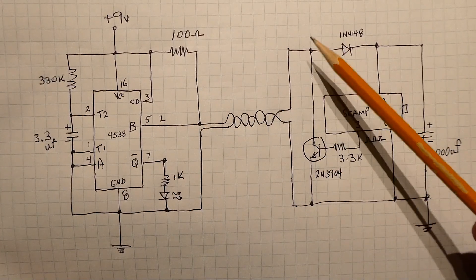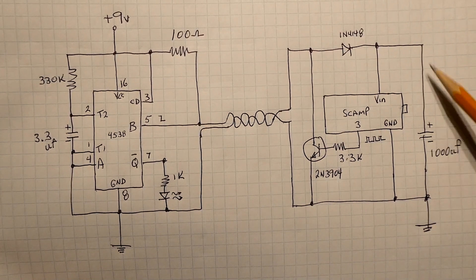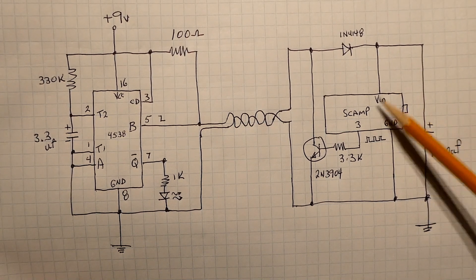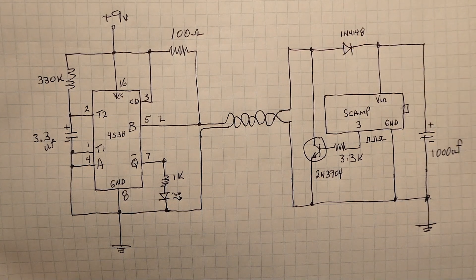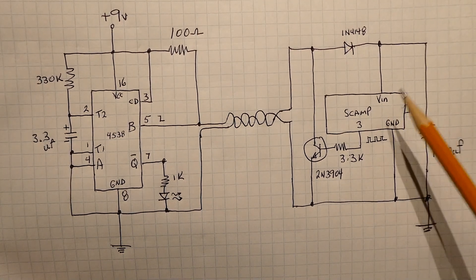Now while we're shorting up the power supply, this 1000 microfarad capacitor is holding the voltage into VIN of the SCAMP board and it can't discharge this way because it's being blocked by this diode.